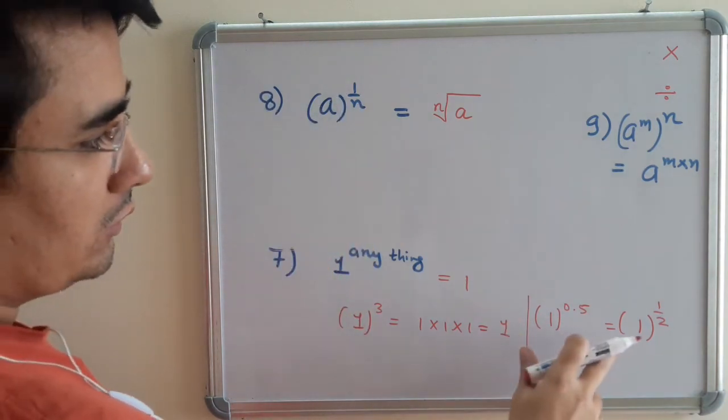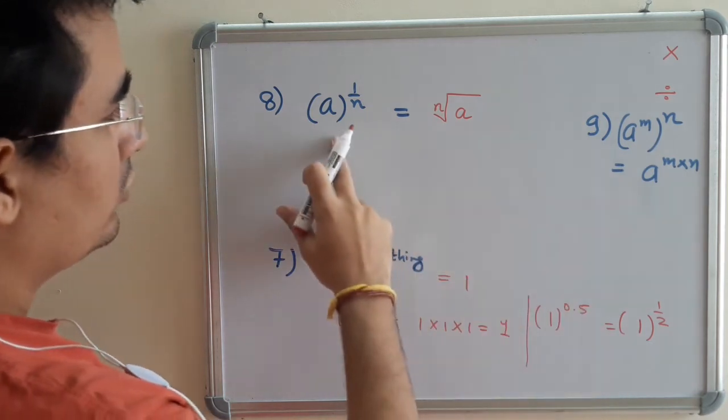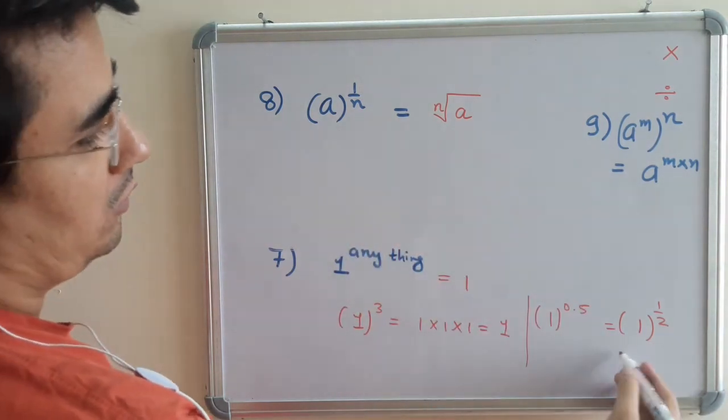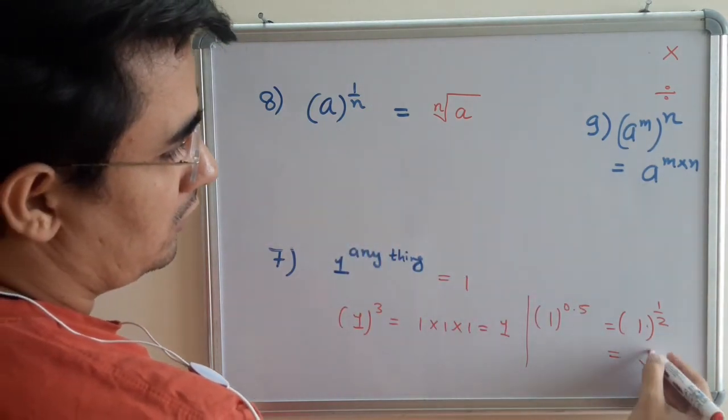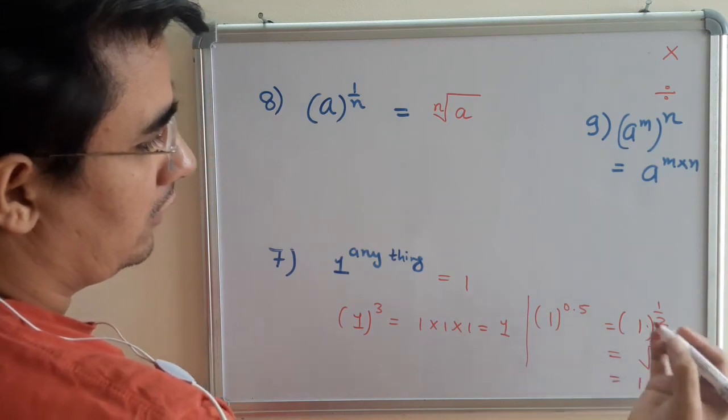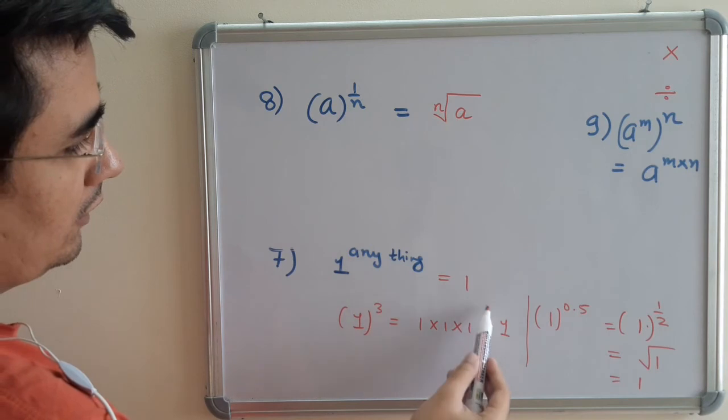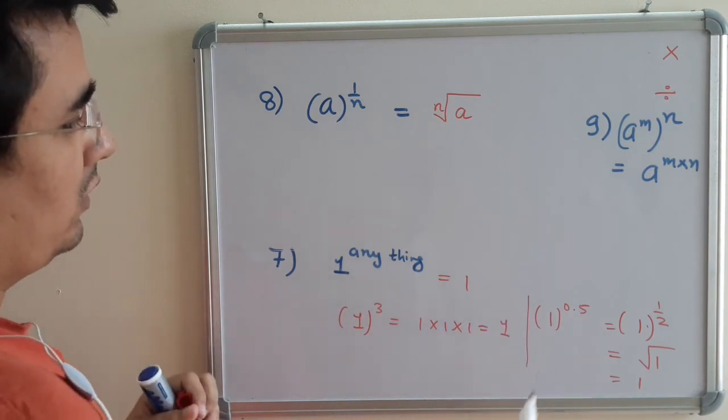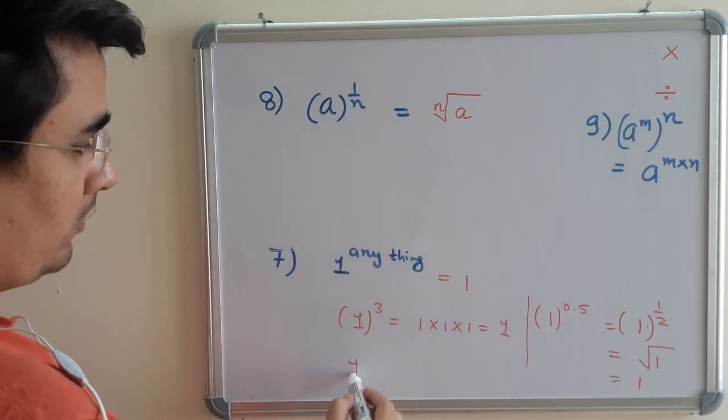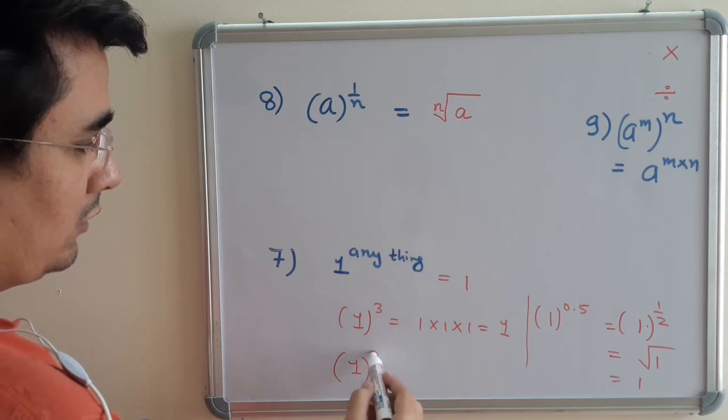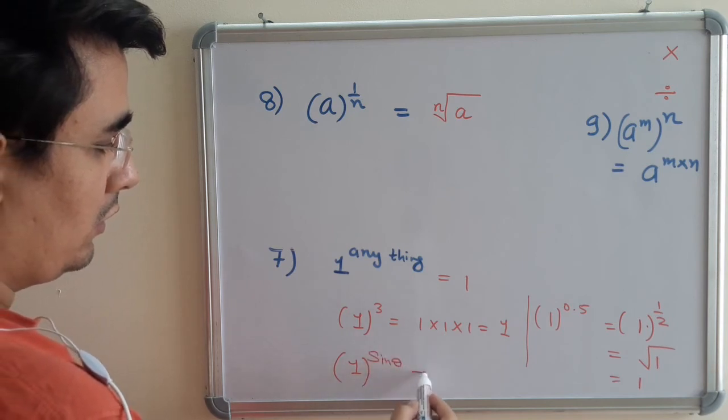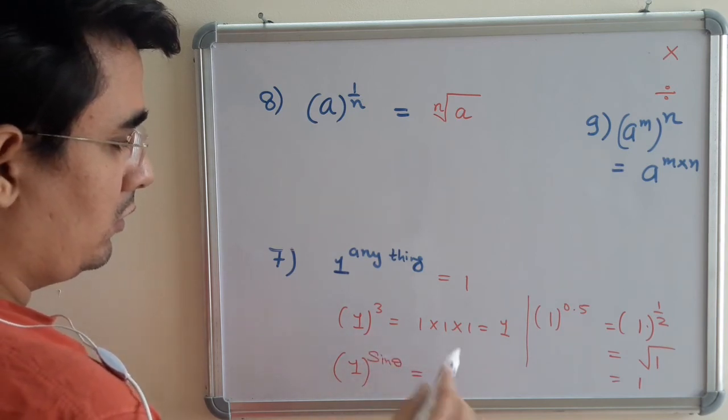So we have to solve this thing. As we got to know this is in root, I can write it as root of 1, and root of 1 is 1. So as we got to know, 1 power anything is always 1. Remember this thing. So 1 power anything means anything, suppose sin(θ), it becomes 1.